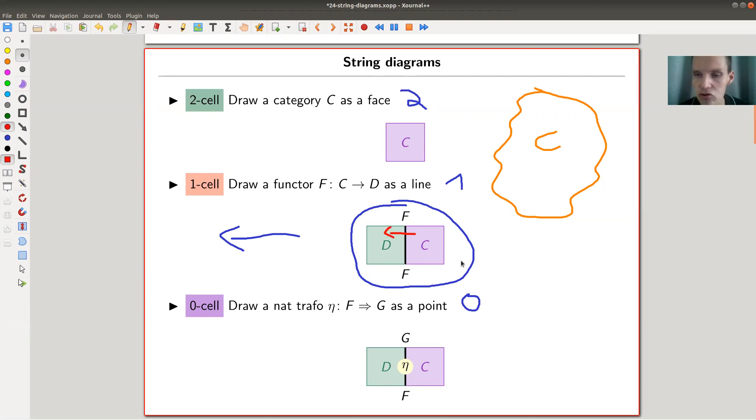You're going to need to cross the border in order to go from C to D and that's a functor. A functor is not just a line. Categories are faces, functors are lines, and what could be now a natural transformation? Well, a natural transformation from F to G.